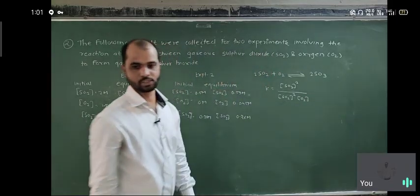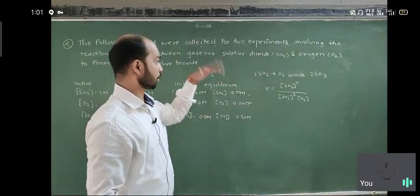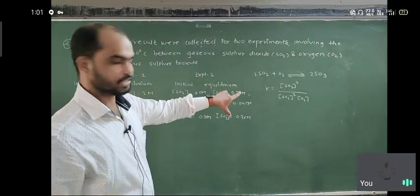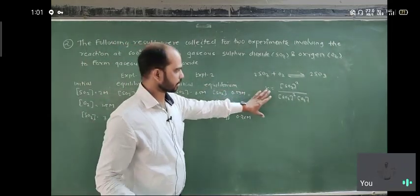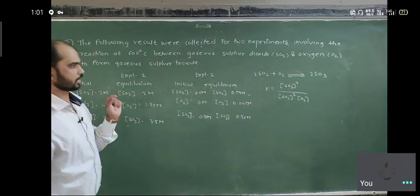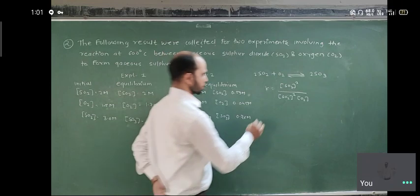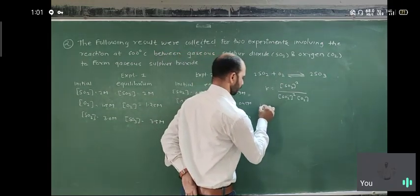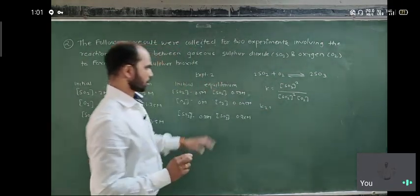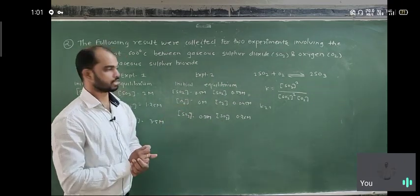We consider Kc, not Kp, because no pressure conditions are given. Using this equation for both experiments, we can calculate K. For experiment one, K1 is equal to — we use the same equation because the reaction is the same, we just change the values.